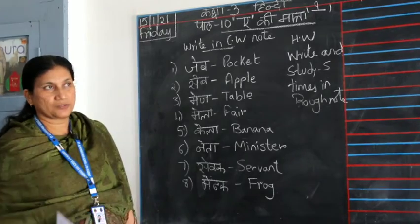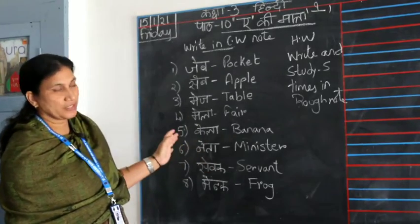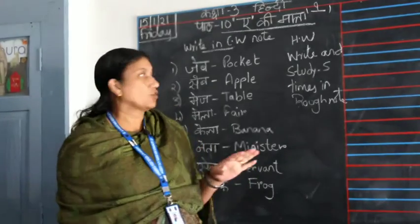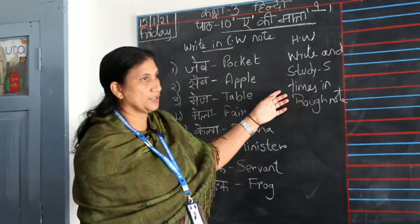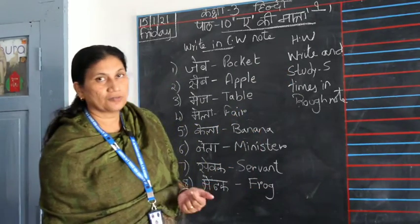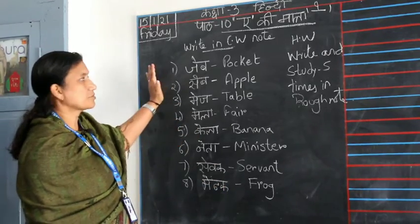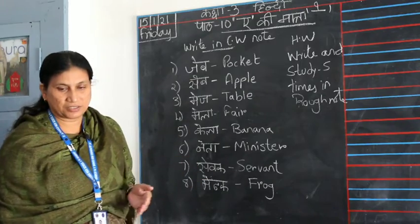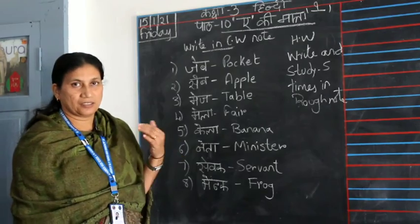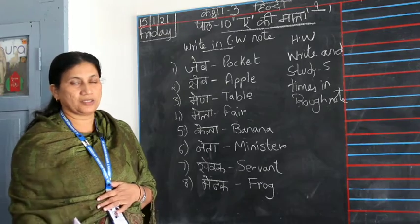So these eight words that I've written on the board — first write the lesson number, then write the eight words in your classwork note. After finishing, write and study these words five times in your rough note. That's your homework. Write it, learn to pronounce it, take a picture, and send it to Rohana ma'am's WhatsApp number.